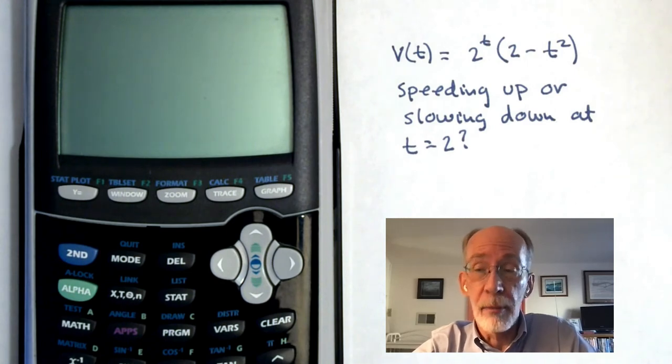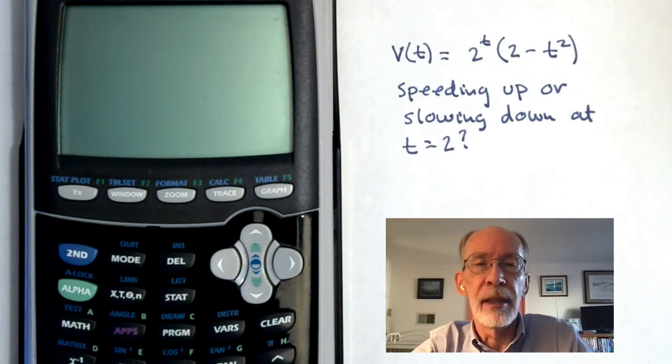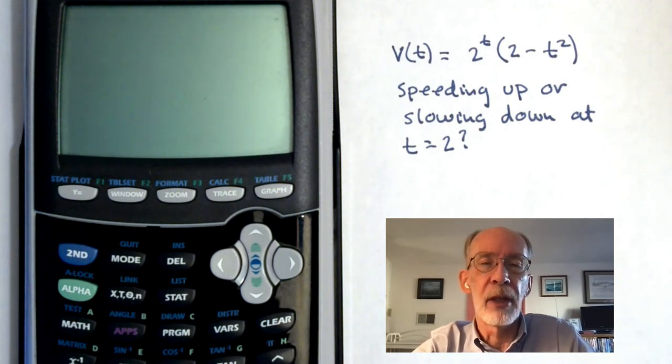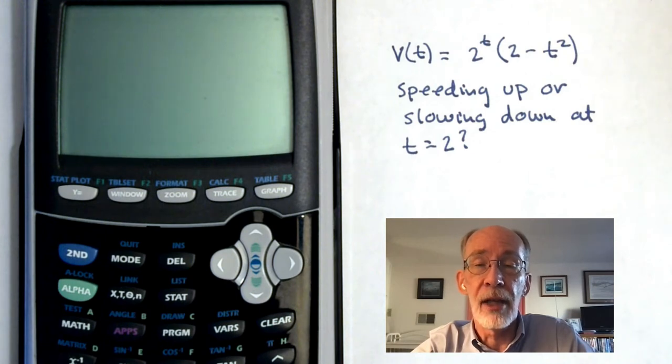So our little problem is that we have a particle under rectilinear motion. Its velocity at time t is given by v(t) equals 2^t(2-t^2). And the question is, is the particle speeding up or slowing down at time 2? And if you're familiar with these sorts of applications, you know that what we need to do is compare the sign of the velocity and its derivative, the acceleration, at the time in question.